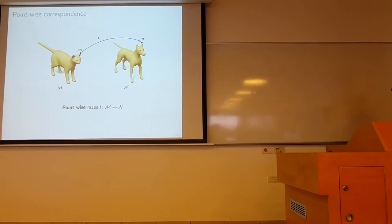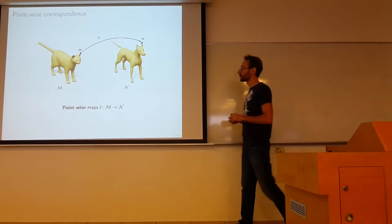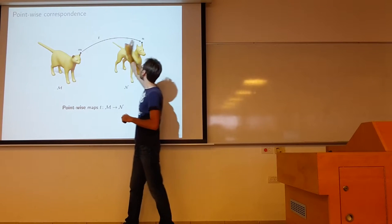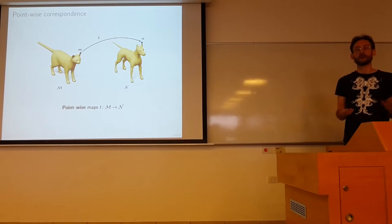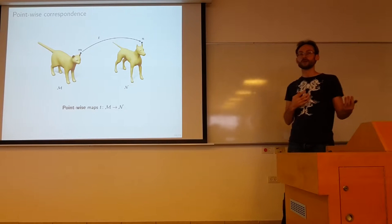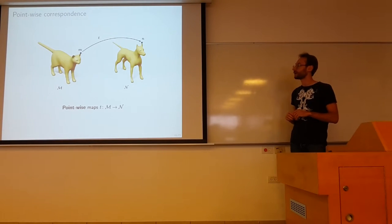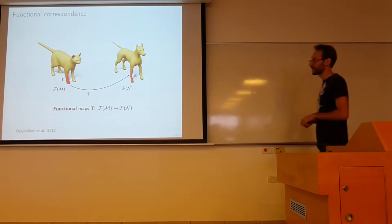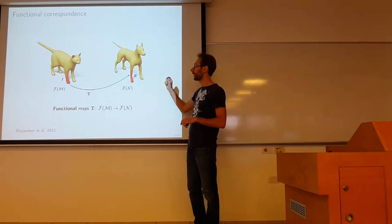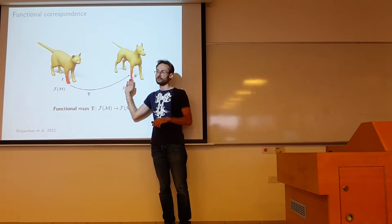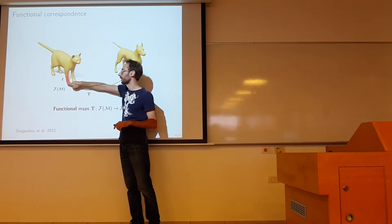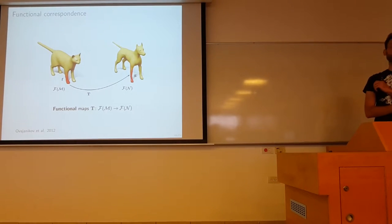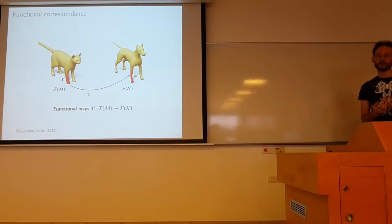The classical model for correspondence is a point-wise map. Given the cat and the dog, basically you want a map from a point on the cat M to a point on the dog N. You can impose certain properties on this map — for example, you want it to be bijective, to preserve some structures like geodesic distances. A quite significant paradigm shift came from the work of Ovsjanikov and co-authors, who, instead of considering point-wise maps, consider linear maps from the space of functions on one manifold to functions on another manifold. A function on the cat is mapped to a corresponding function on the dog by a linear map. Point-wise correspondence is a particular case — it maps deltas to deltas.